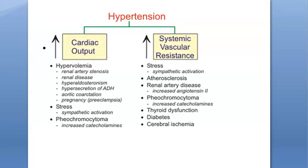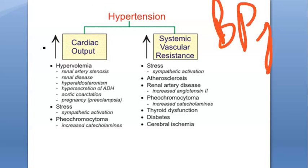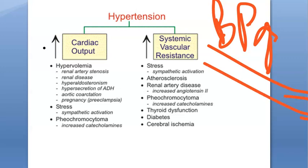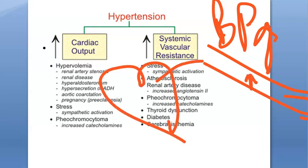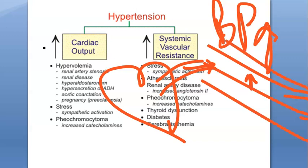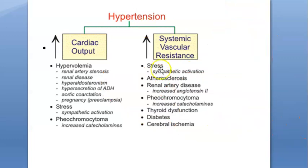Blood pressure will be more because the heart is pumping more — cardiac output is more — or the resistance is more. If the vessel is constricted, the pressure will be more. If it vasodilates, the pressure will drop. Systemic vascular resistance: vasodilation will decrease the blood pressure, vasoconstriction will increase the blood pressure.